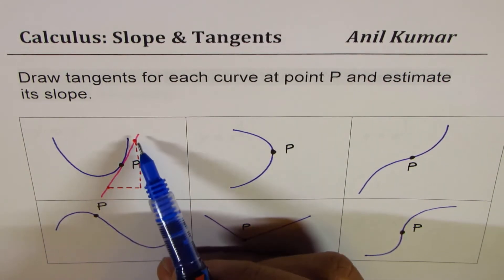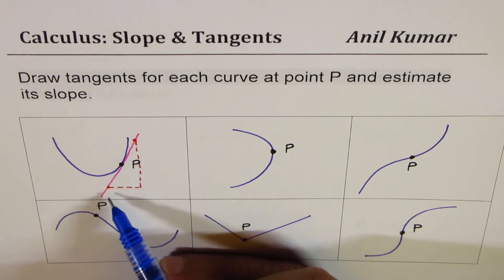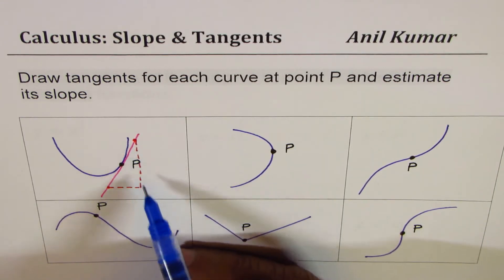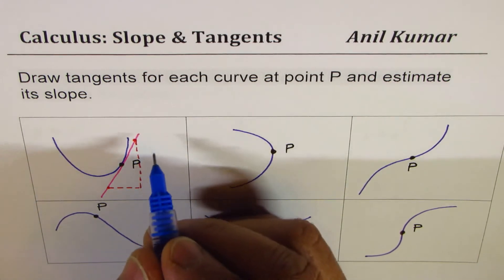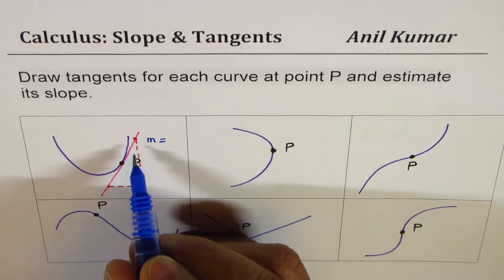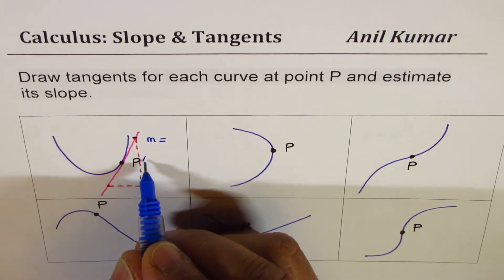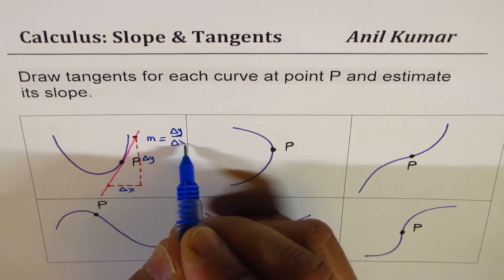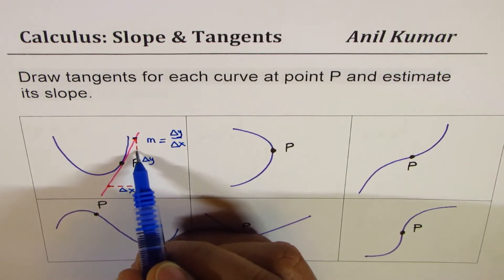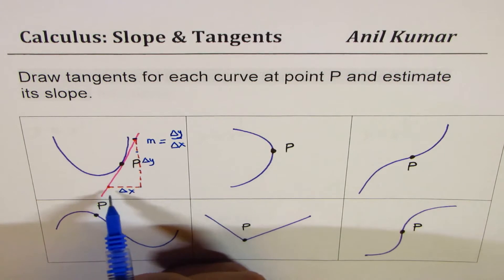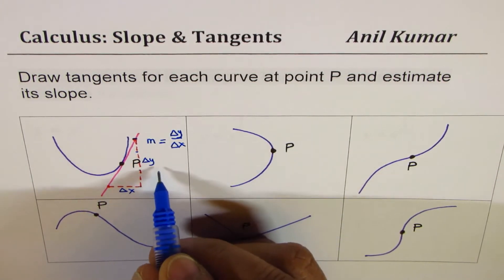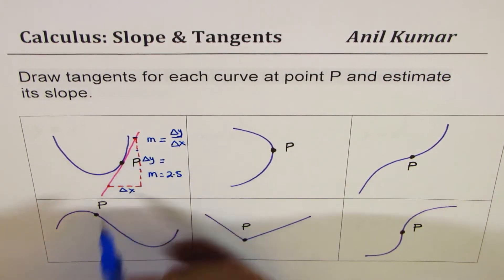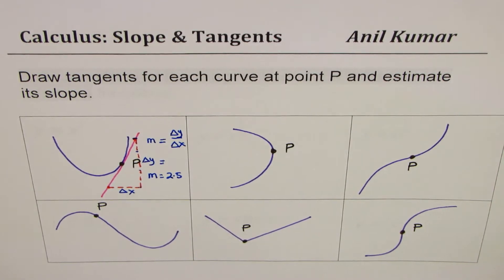I'd like you to copy these kinds of graphs, mark point P, draw a tangent line, and then calculate or estimate the slope. To draw a tangent line at a point, you draw a line which looks like a tangent as shown here, then take two points on the line and form a right triangle. The slope m will equal change in y divided by change in x — delta y over delta x. Estimating here, it seems to be about 2.5, so m equals 2.5.